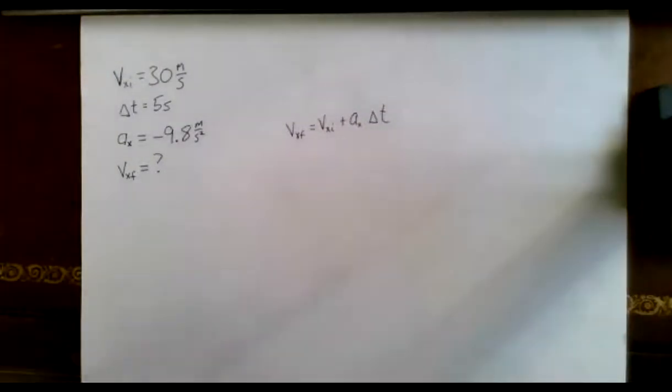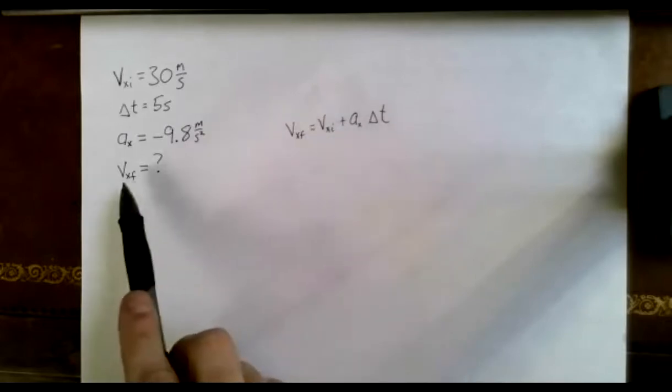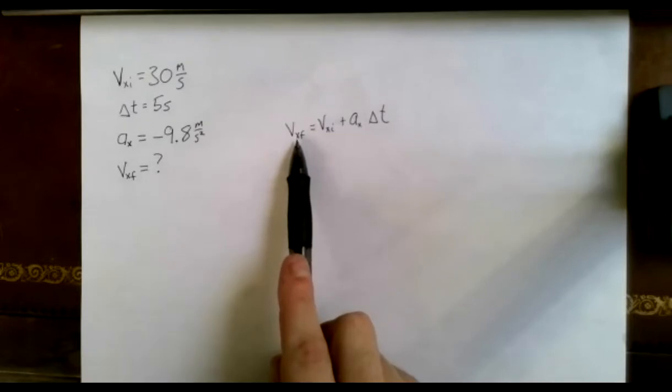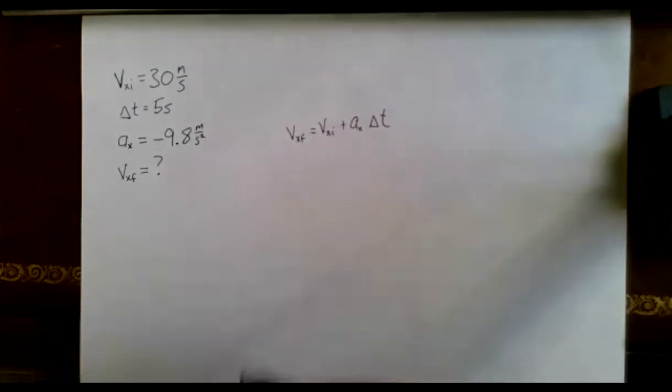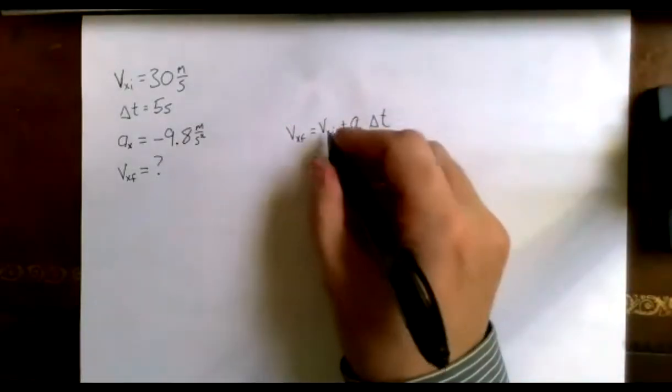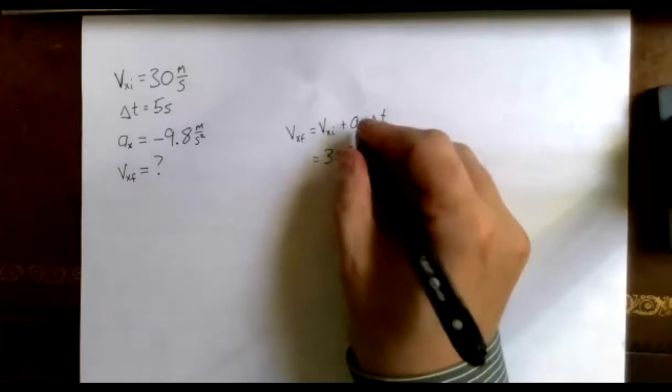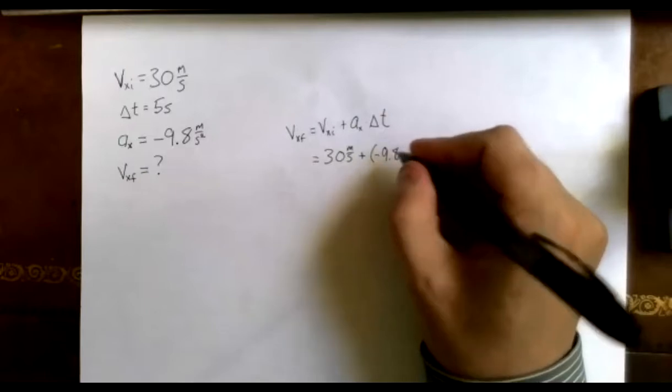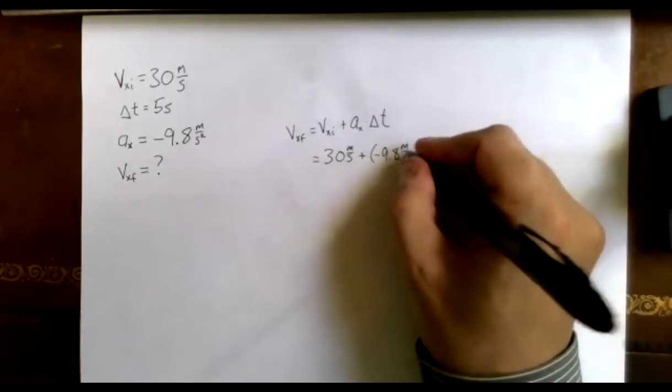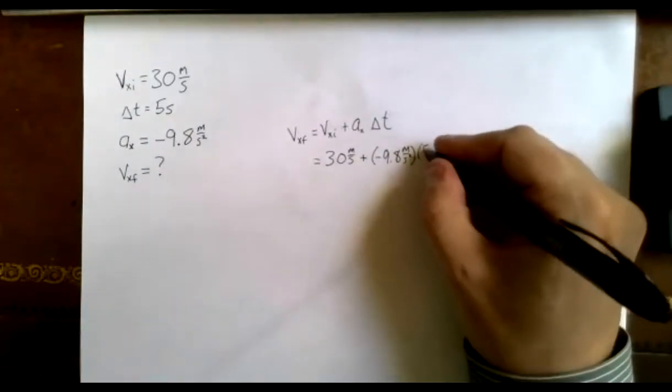That's my step three. Now the next step would be to rearrange it if I have to, right? But VxF is my unknown, and VxF is already by itself on one side, so I don't need to do any of the algebra. I can just plug the numbers right in. So VxI was 30 meters per second plus the acceleration was negative 9.8 meters per second squared times the time was five seconds.